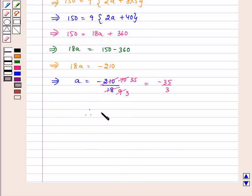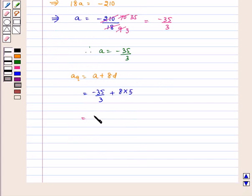Therefore A is equal to minus 35 by 3. Now we have to find A9. A9 is equal to A plus 8D which is equal to minus 35 by 3 plus 8 multiplied by D. D is equal to 5 which is equal to minus 35 by 3 plus 40.